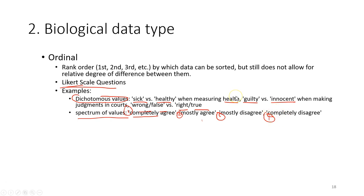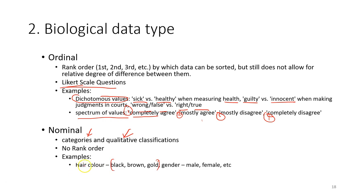The last category of data is nominal data. This data is mainly used for category name or qualitative classifications. There is no rank order, that means you cannot rank it. For example, hair color—it's just a nominal data, you cannot rank it. Gender, you also cannot rank it because they are equal. They are used to describe the category of the experiment you need.